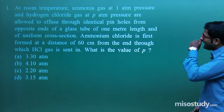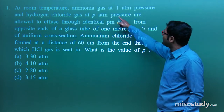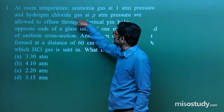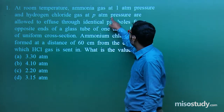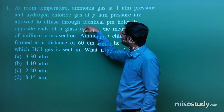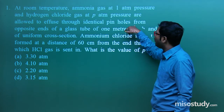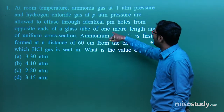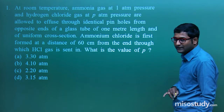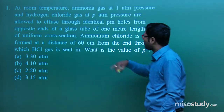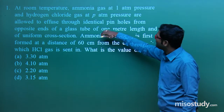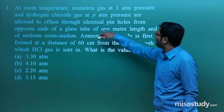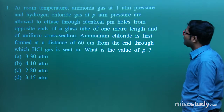What the question says: at room temperature, ammonia gas (NH3) at 1 atm pressure and hydrogen chloride gas at P atm pressure are allowed to effuse through identical pinholes from opposite ends of a glass tube of 1 meter length, of uniform cross section.